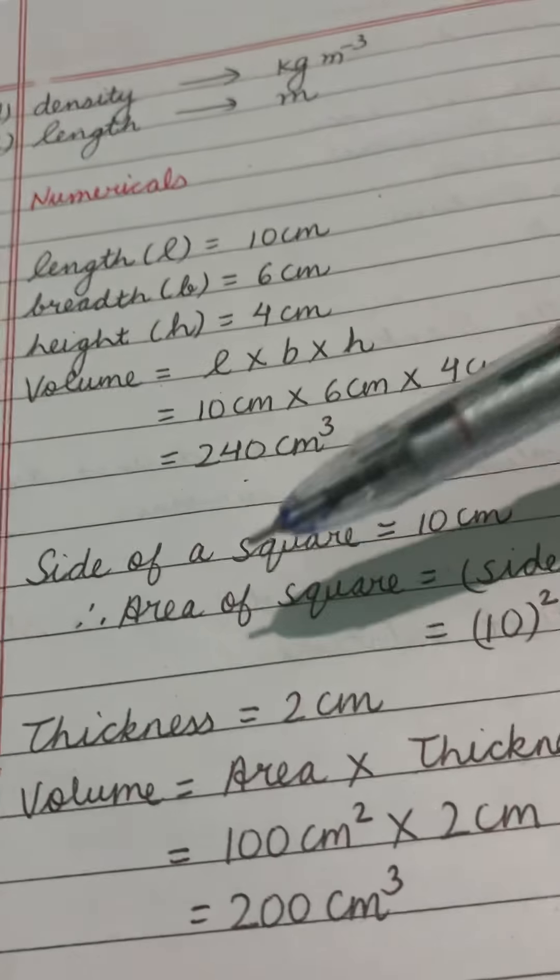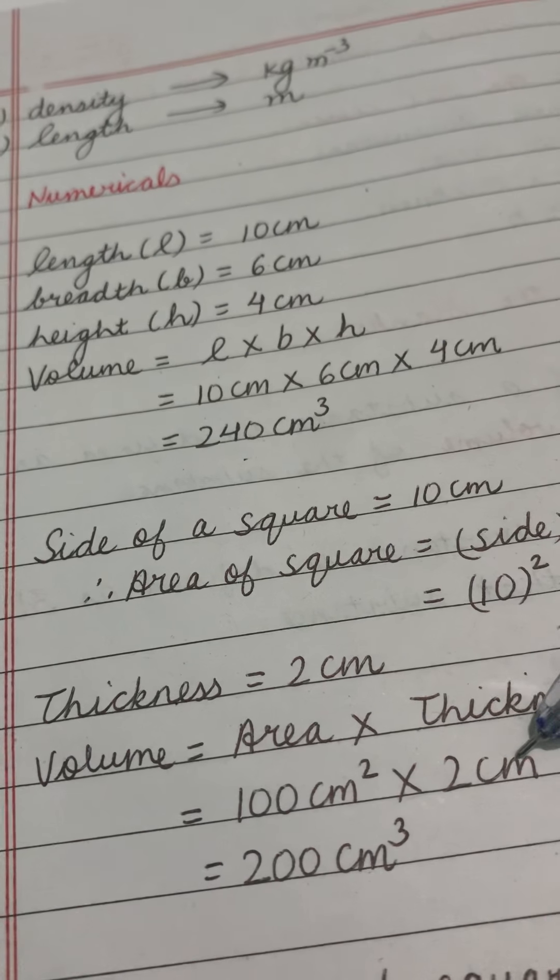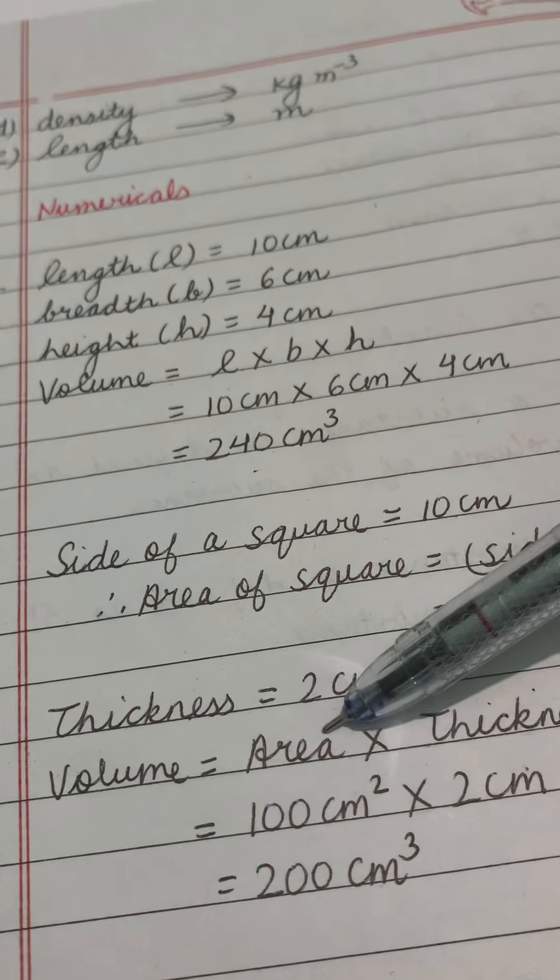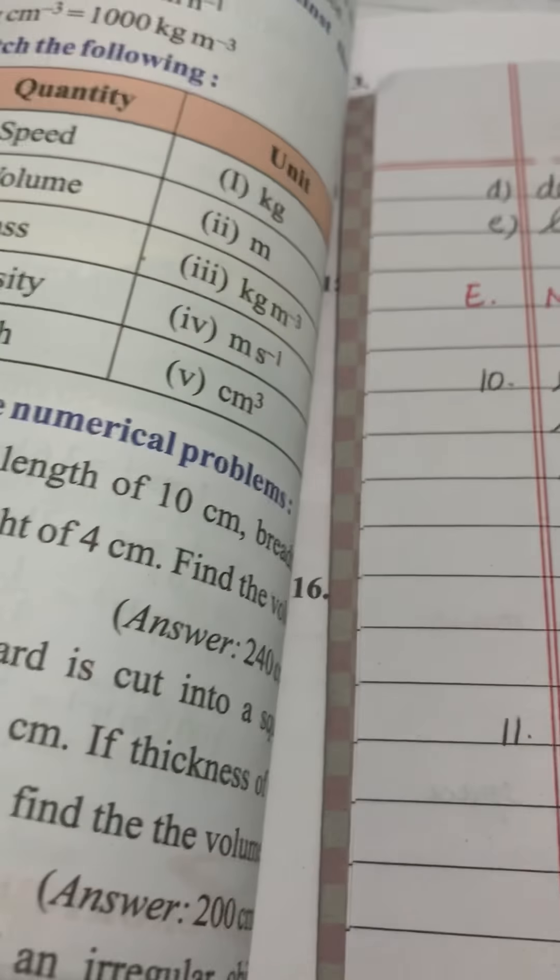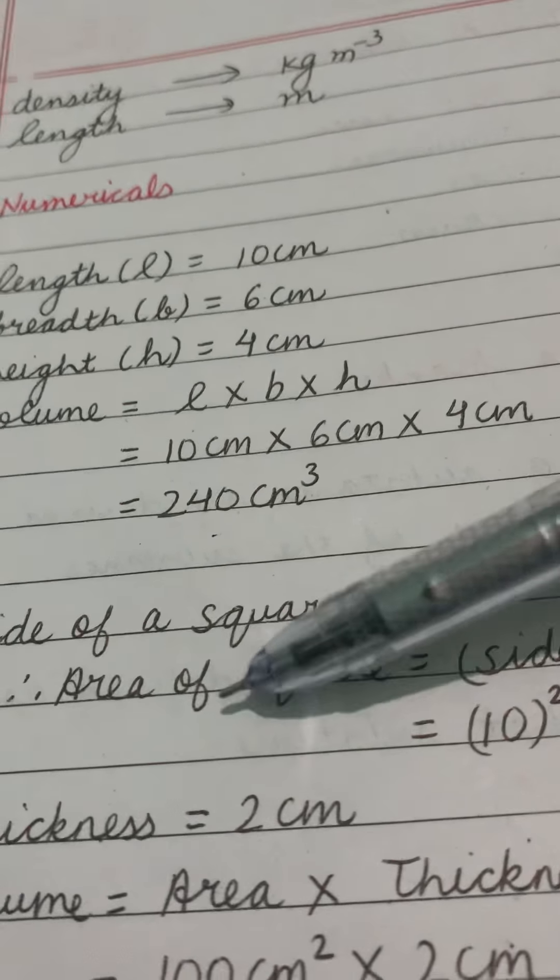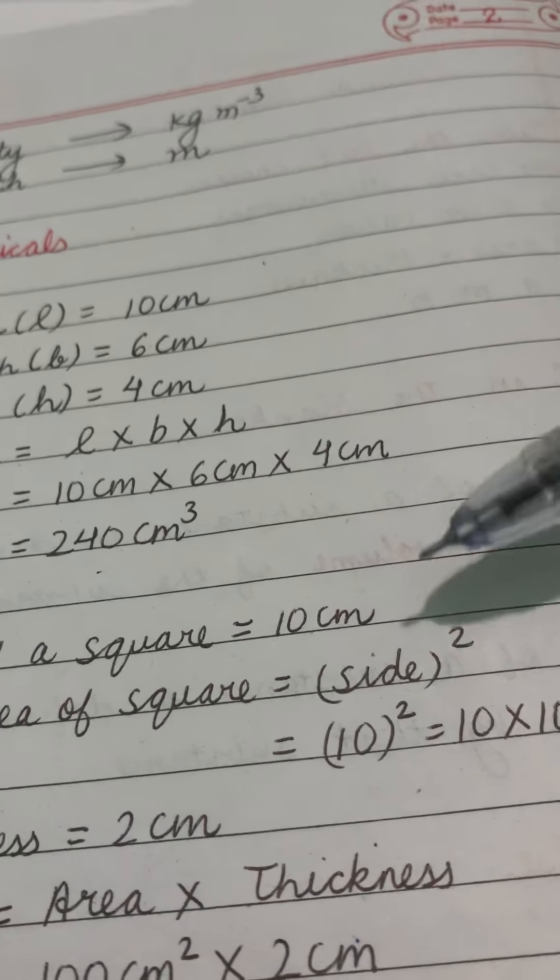One formula, second formula we have studied that is volume is equal to area into thickness. Thickness we have 2 cm but we need to find the area. Since it is a square so we have to find the area of a square because we cut the cardboard in the shape of a square. Now what is the area of the square? It is side square or side multiply side.